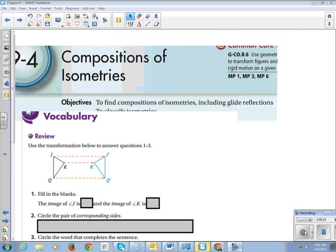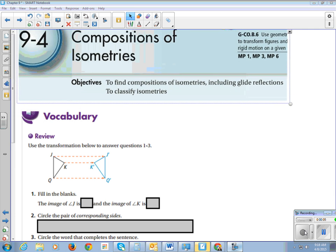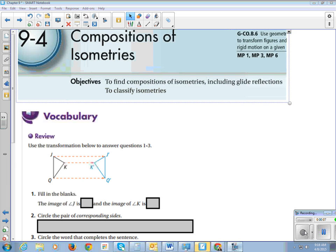All right, so this is Chapter 9 in Geometry, Section 4, Compositions of Isometries. And our learning objective is, at the end of this, you should know how to find compositions of isometries, including glide reflections, and then you should also be able to classify isometries.